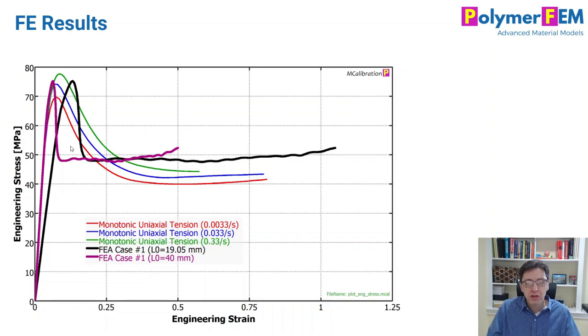I plotted in this graph two different ways of doing this. The first one is simply taking the applied displacement, dividing it by the length of the whole specimen. And that gives me this purple line and it drops very rapidly.